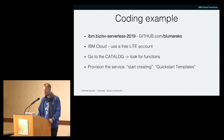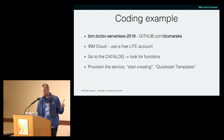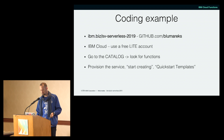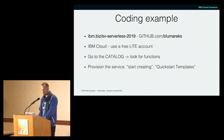It's going to be a very short talk. If you try the demo with me and show me the results, you'll get a bottle. Go to ibm.biz/cv-serverless-2019 or find it at github.com/bluemareks — without the e. You'll need to create a free IBM Cloud Lite account using just an email address. In the catalog, look for Functions, provision the service, and go to the quick start template. It's all described at ibm.biz/cv-serverless-2019.